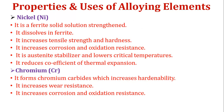Next element — nickel: it is a ferrite solid solution strengthener, dissolves in ferrite, increases tensile strength and hardness, increases corrosion and oxidation resistance, is an austenite stabilizer and lowers critical temperature, and reduces the coefficient of thermal expansion — due to that it is generally used for making measuring instruments. Then chromium: it forms chromium carbides, increases hardenability, increases wear resistance, and increases corrosion and oxidation resistance.